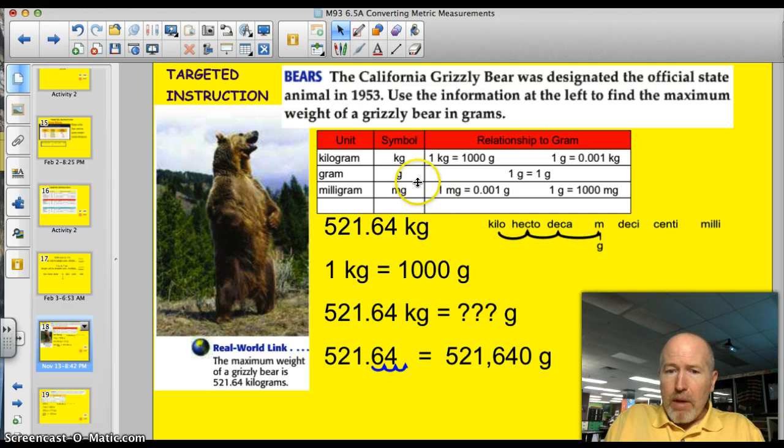One more time. I'm going from kilograms, which was the measurement I was given, to grams, which is one of our base units. In order to get there, I have to make three jumps. 1, 2, 3. Which means I'm going to move my decimal point three spots to the right.